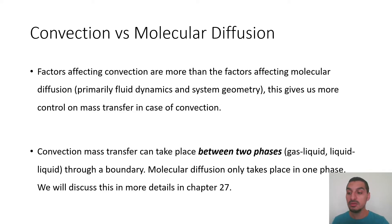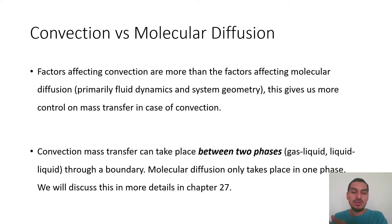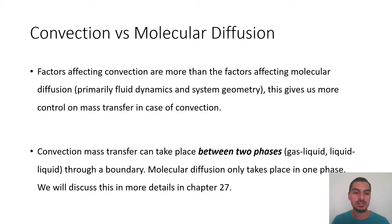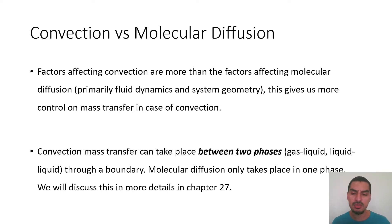In convection, you don't have this restriction. Mass transfer by convection can take place between phases and it's still convection. For a species diffusing from liquid to vapor, you have convection in the liquid phase and convection in the vapor phase, and the same equation can represent the flux of mass transfer between the two phases — something you cannot do with molecular diffusion. This is the basis of a lot of mass transfer equipment design, and we will discuss this in more detail in Chapter 27.